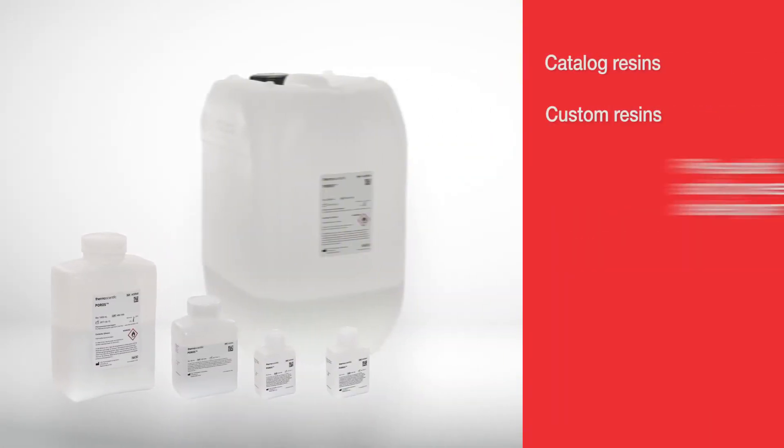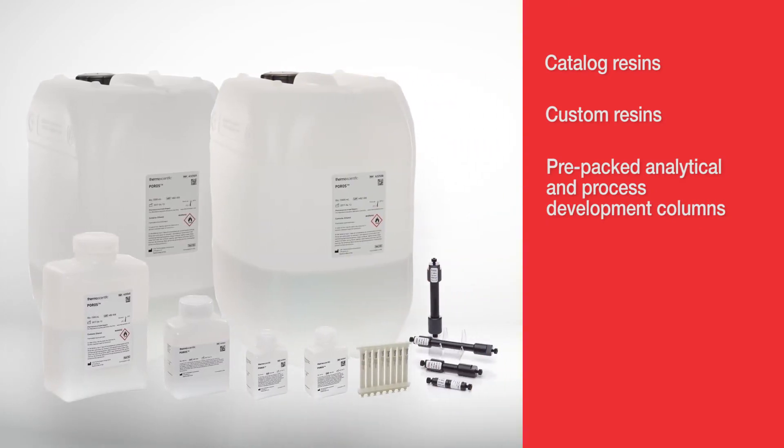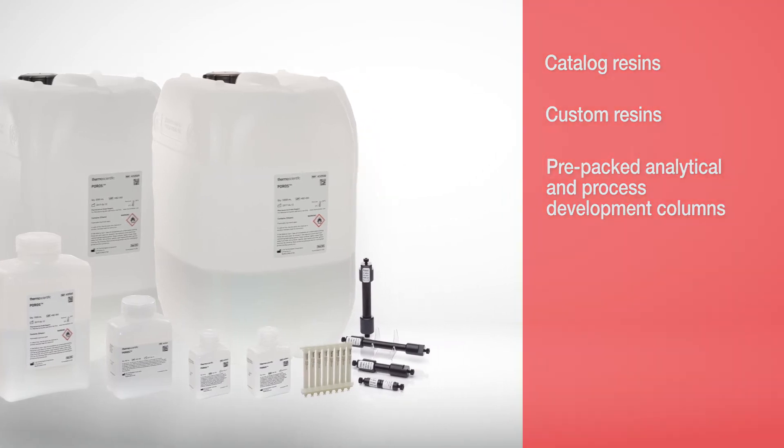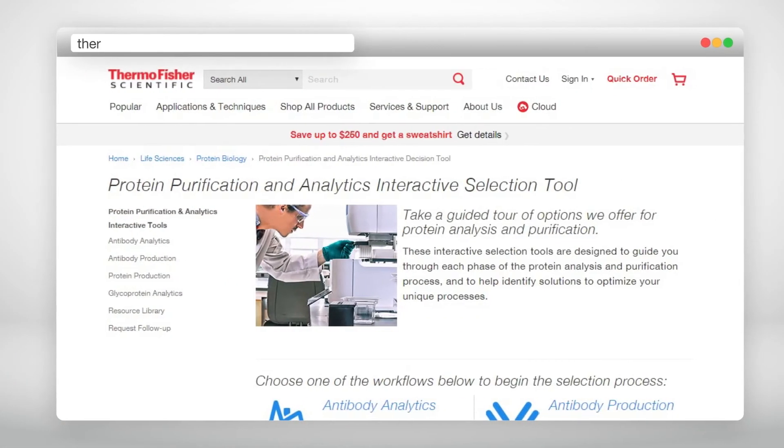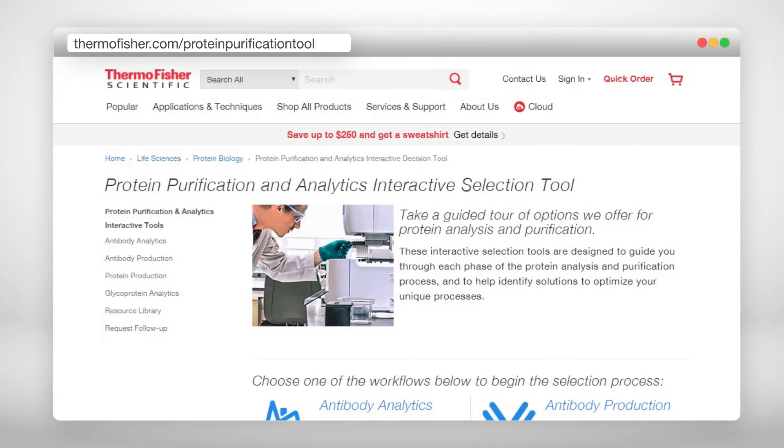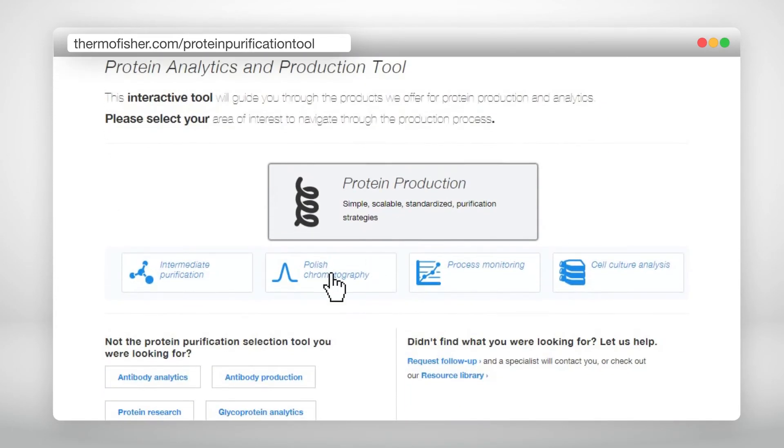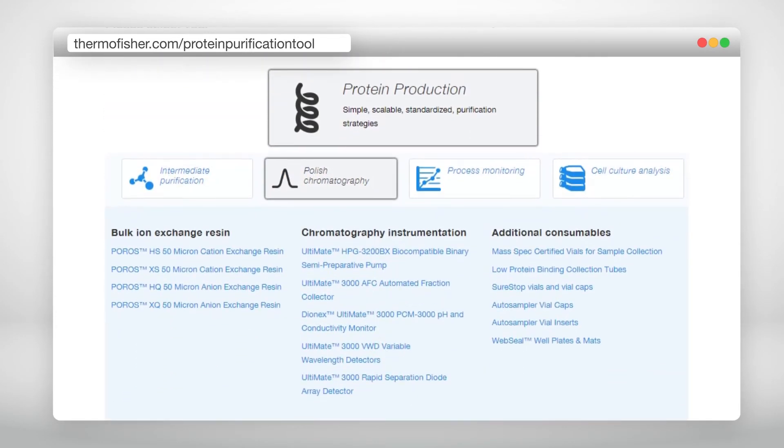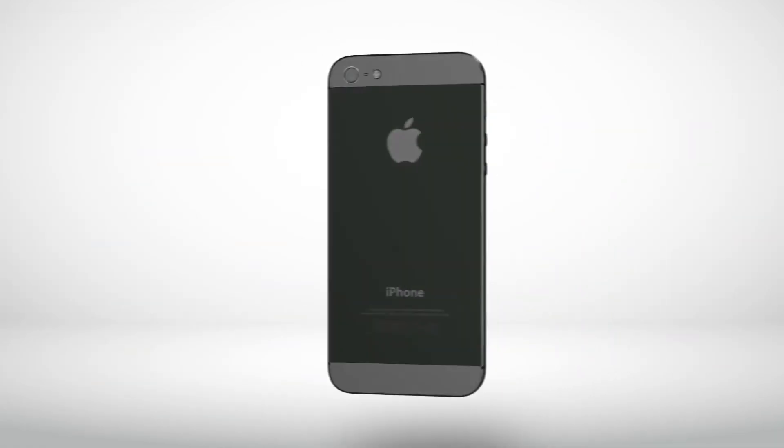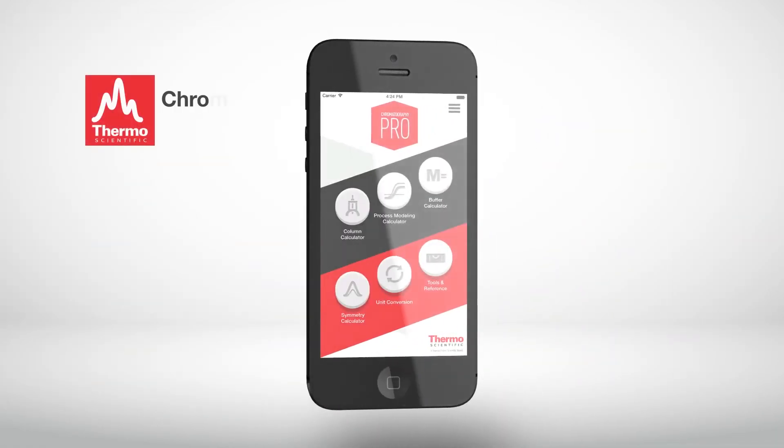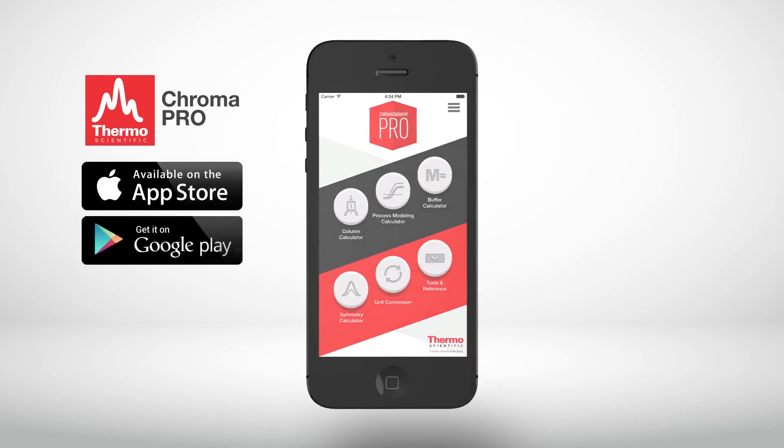Products are available in both catalog and custom resins and in pre-packed analytical and process development columns to meet all purification needs. The right Thermoscientific Porose products for your process can be easily selected on our website through the Protein Purification and Analytics Interactive Selection Tool. The website also has other helpful purification resources, such as the ChromaPro app for process-related calculations in chromatography.